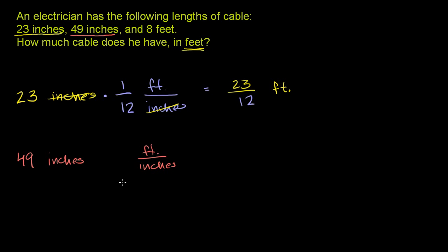So what we care about is feet per inches, and we know that there's 1 foot for every 12 inches, or 1 twelfth of a foot per inch. It can be read either way. When you multiply, the inches will cancel out, and we will be left with 49 times 1, which is 49 over 12 feet. That is the second cable.